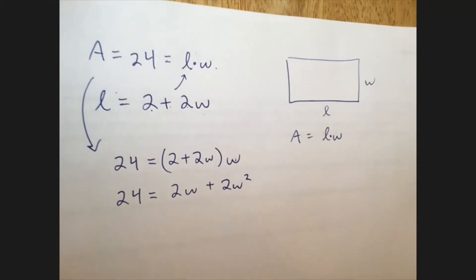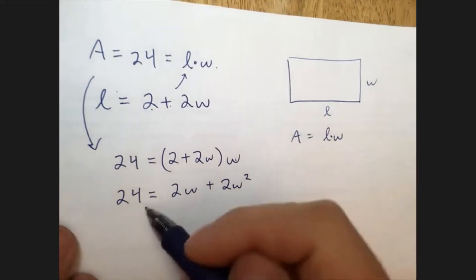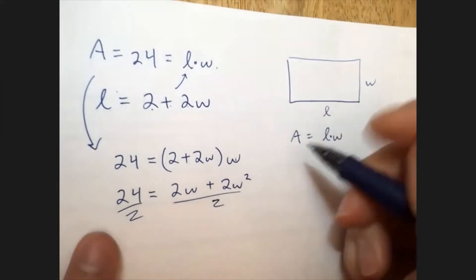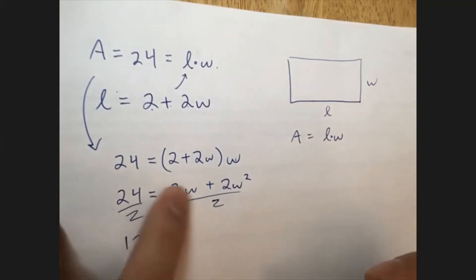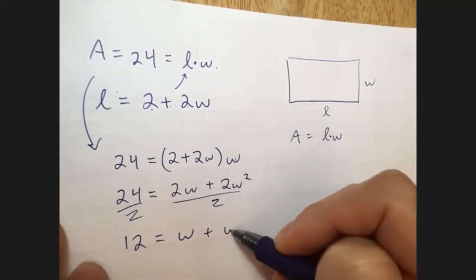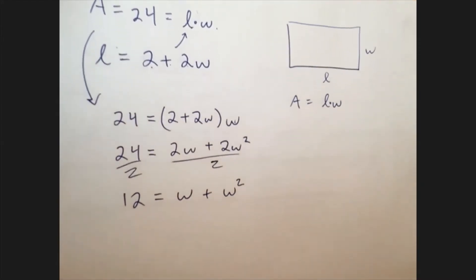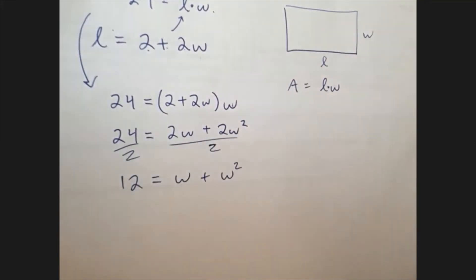Okay. Right away, I can see that everything is divisible by 2. So let's just divide through by 2. Divide everything by 2. If you can do that, that's fantastic. So 24 divided by 2 is 12. 2W divided by 2 is W. 2W squared divided by 2 is just W squared. Okay. That's not always going to happen, but that's nice. It did happen to happen that everything was divisible by 2. So let's just divide it.